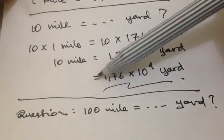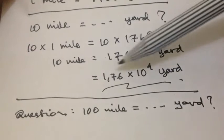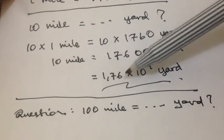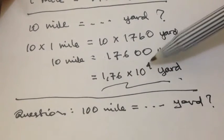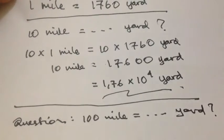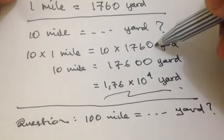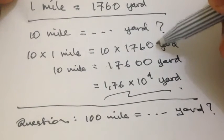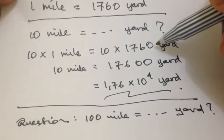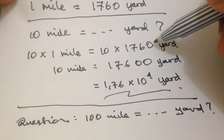In other words, we can write it like this: 1.76 multiplied by 10 to the power of 4 yards. Because we multiply 10 with this number, we'll have another 0 at the front of the number.